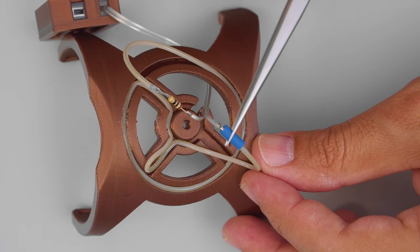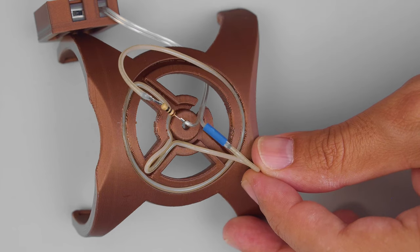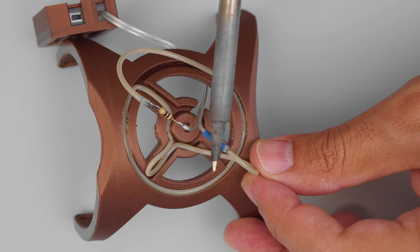Solder the battery cables to the noodles' pins with an inline resistor. Remember to add heat-shrink tubing to insulate those connections.